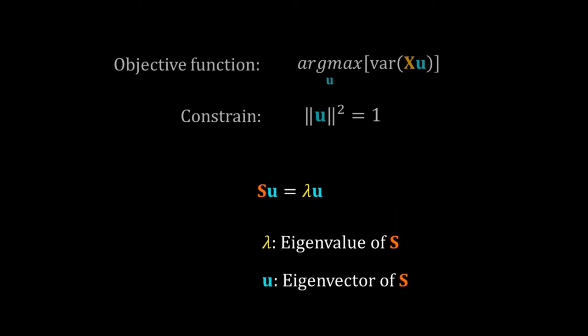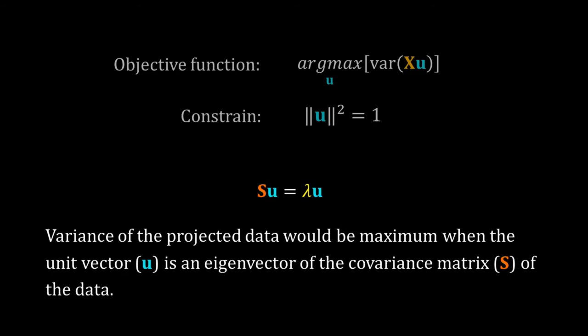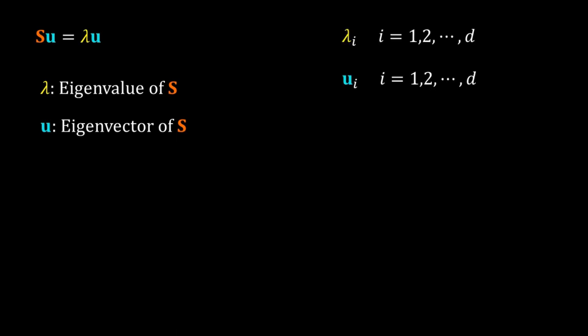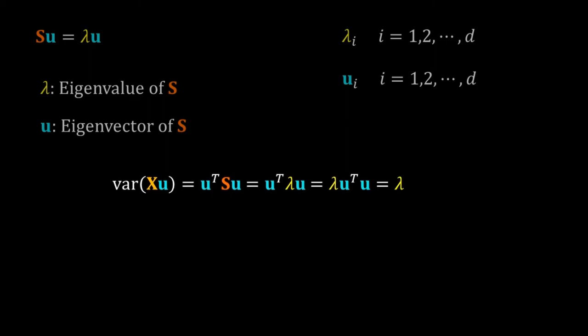This relation Su equals λu looks familiar. By definition, λ must be an eigenvalue of S and u must be the corresponding eigenvector. We want to maximize the variance of the projected data, and our calculation says variance will be maximum when the unit vector u is an eigenvector of the covariance matrix. The variance of the projected data equals u transpose Su. Replacing Su by λu, and since u is a unit vector (u transpose u equals 1), the variance equals λ, the eigenvalue.